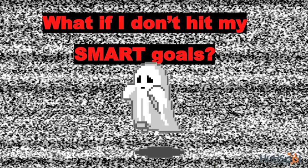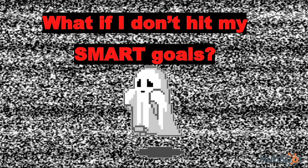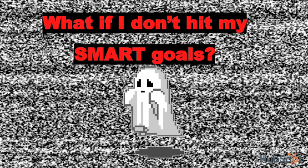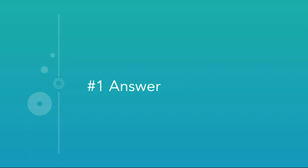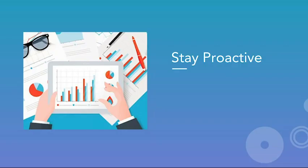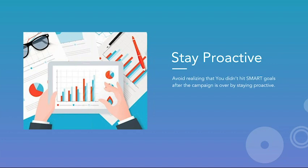The number one question I get about SMART goals is: what if I don't hit them — am I doomed? The simple answer is no. Everyone makes mistakes and you'll actually learn a lot from them. By staying proactive you can avoid worst-case scenarios. There's a real case where a client spent around $20,000 on a campaign that never got published, making it irrelevant. That's why staying proactive is so important — please avoid discovering you didn't hit your goals only after the campaign is over.